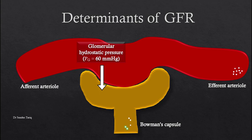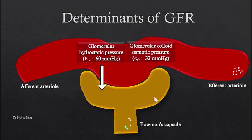The next important determinant is the glomerular hydrostatic pressure, the first Starling force important in determining GFR. This hydrostatic pressure is almost equal to 60 millimeters of mercury and forces fluid to move from the glomerulus into the Bowman's capsule — it is a force that favors filtration. The second important Starling force is the glomerular colloid osmotic pressure, contributed by plasma proteins present inside the vessels. These plasma proteins remain inside the capillaries and are not filtered into the Bowman's capsule.